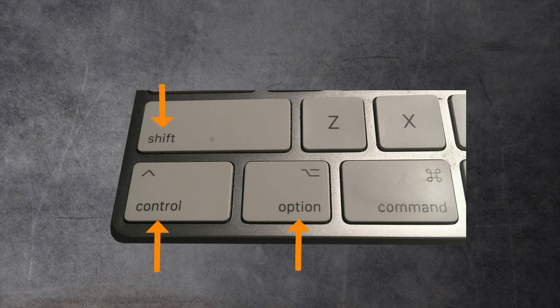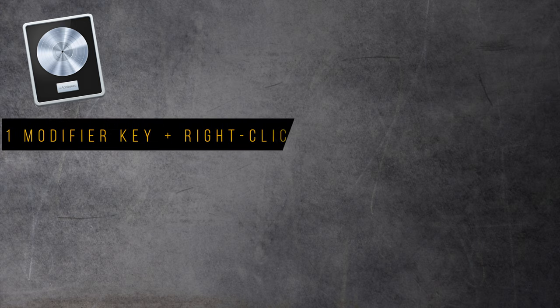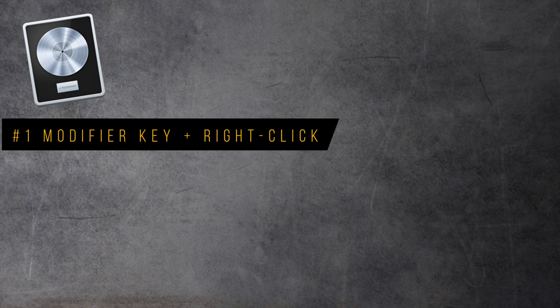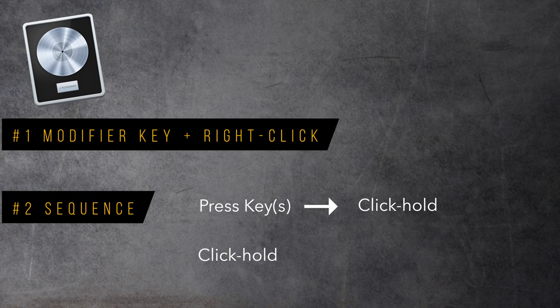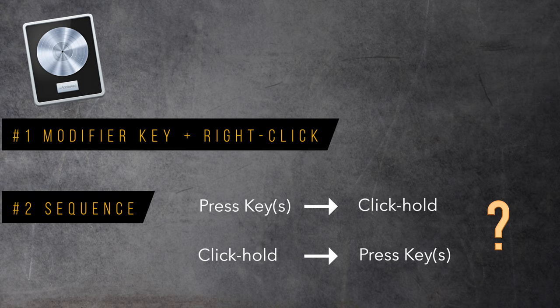Modifier keys: pressing down a combination of modifier keys during click actions changes the outcome — for example, Shift, Control, Option, or Command. Two things to pay attention to in Logic: modifier keys are usually used with a left click, but Logic also uses modifier keys with a right click, which I'll show later. Also important is the actual sequence, especially with a click-hold. Do you hold down the keys first and then click-hold, or do you click-hold first and then press the modifier key? There are many cases in Logic where users think an action doesn't work because they press and click in the wrong order.